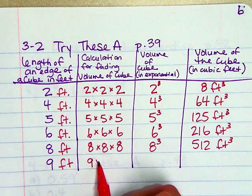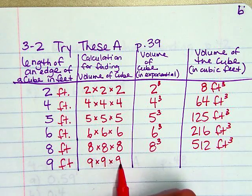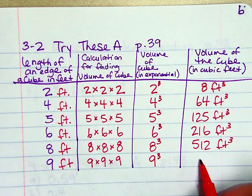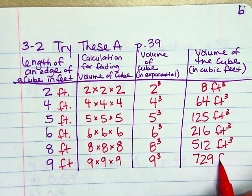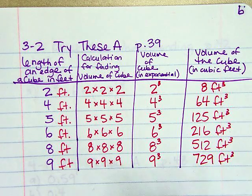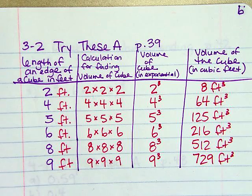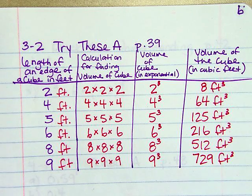Last but not least is a 9 by 9 by 9 or a 9 cubed. And that will give me 729 feet cubed. So that is the entire try these A. It was just practicing our different forms and the volume of a cube.